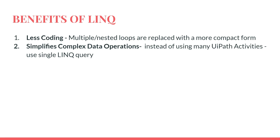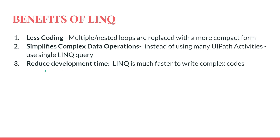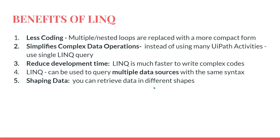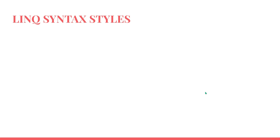Second benefit: LINQ simplifies complex data operations. Instead of using many UiPath activities - for example, if you have Excel data and need to filter, order, and find specific insights from it - you would normally use so many activities. With LINQ, you can write one line and get the data. Third benefit: LINQ reduces development time as it is much faster to write complex code. Fourth: LINQ can query multiple data sources with the same syntax. Fifth: you can retrieve data in different shapes.